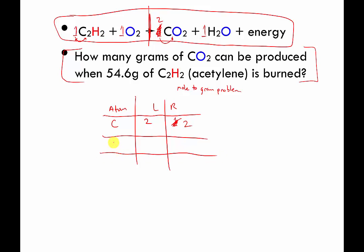How many hydrogens on the left? Well, one times two, also two hydrogens. How many hydrogens on the right? One times two, two hydrogens. So we've got two things balanced. Last up is oxygen.